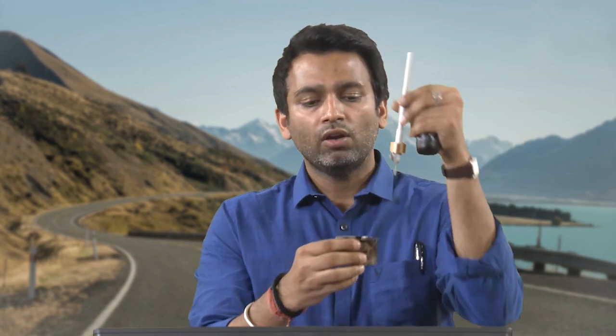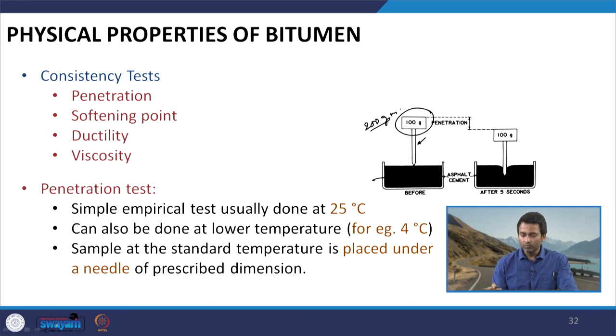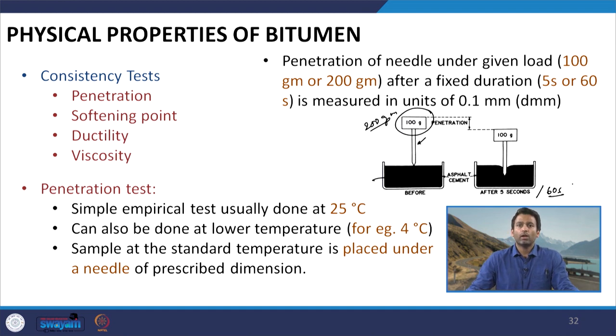Once the bitumen has attained the respective temperature — for example 25°C — we allow the needle to penetrate for 5 seconds under the given weight. After 5 seconds we measure the depth of penetration, which is used as a measure of consistency of bitumen. If doing this test at 4°C, instead of 100 grams we use a 200 gram weight, and the sample is allowed to penetrate for 60 seconds instead of 5 seconds.